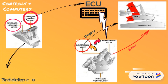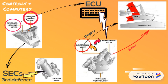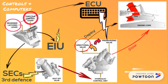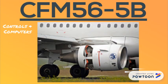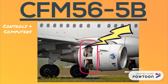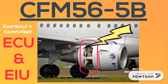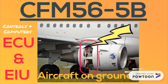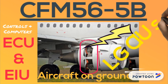For third defense line purposes, the spoiler elevator computers have previously opened the shut-off valve, and the hydraulic pressure is supplied to the hydraulic control unit. Then the engine interface unit permits the reverser deployment by energization of the inhibition relay, so the directional valve can be opened by the electronic control unit. Keep in mind, to command the thrust reverser, the ECU always needs an aircraft on-ground signal supplied by the landing gear control and interface units, LGCIUs.